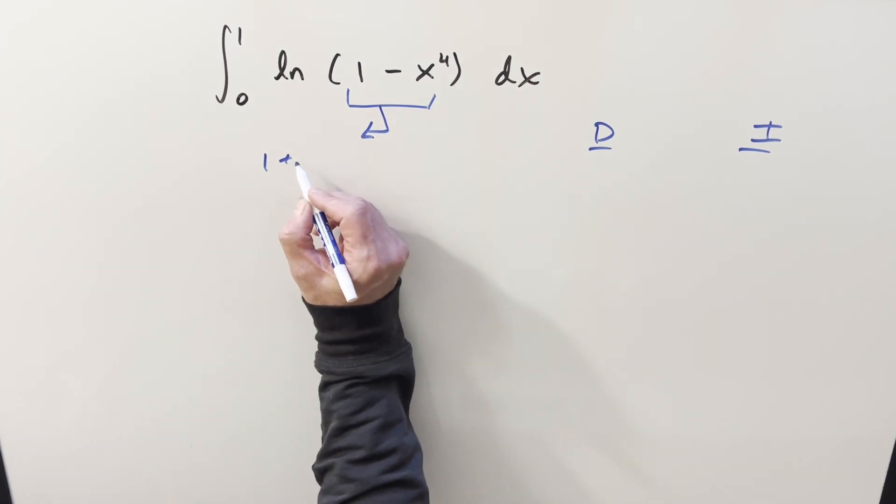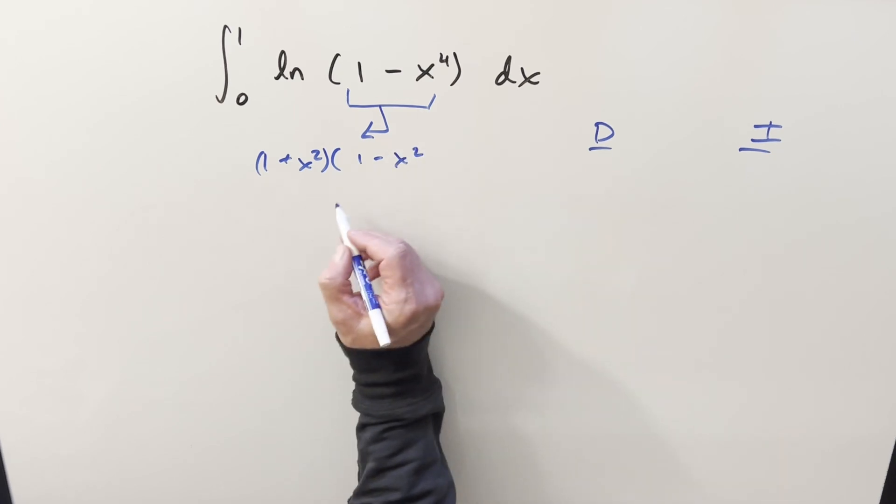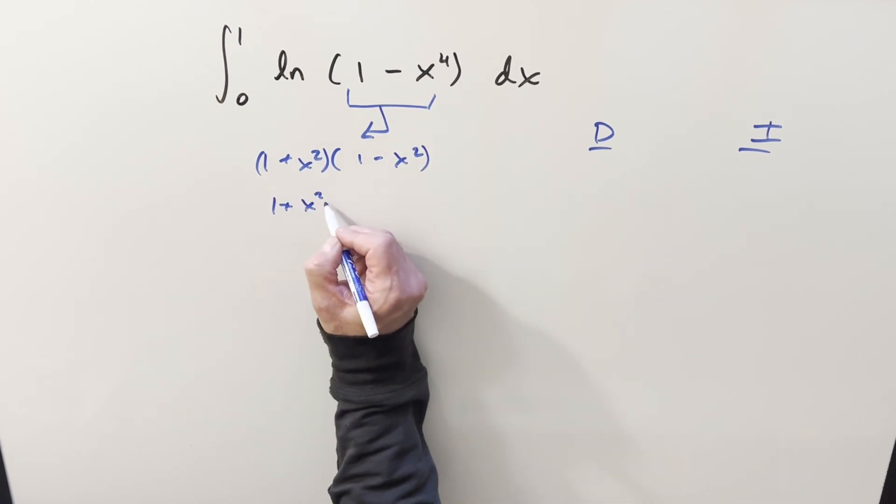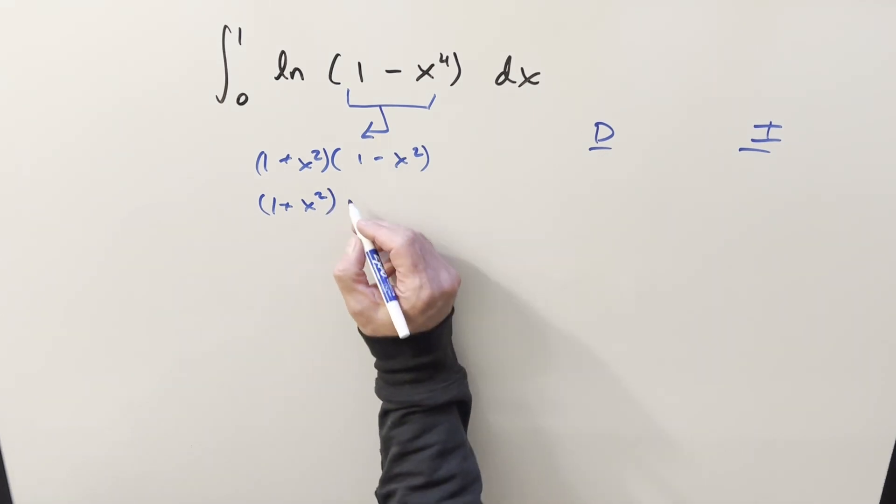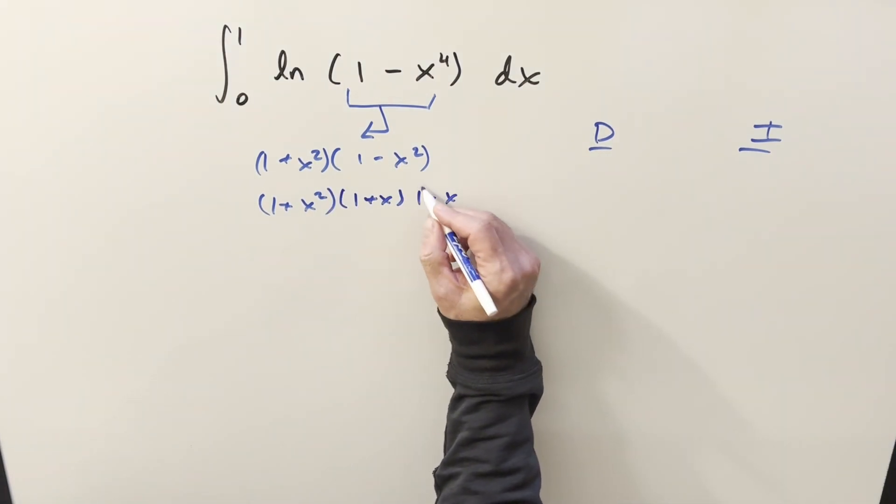So we've got difference of two squares here. So I can write this as one plus x squared times one minus x squared, and then do it again, bring down this piece, and then factoring out this part again with difference of two squares, one plus x, one minus x.